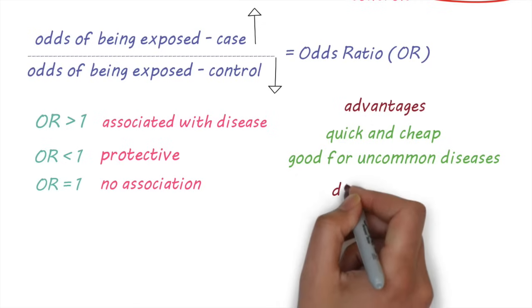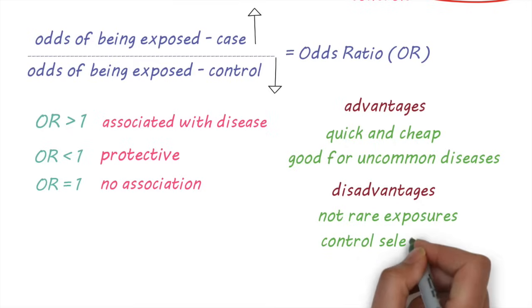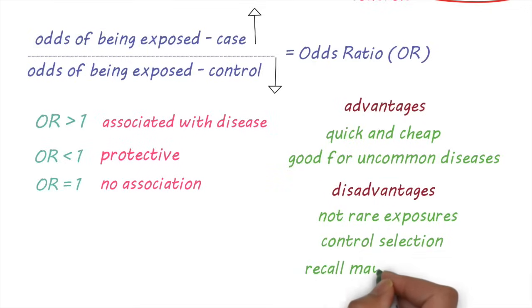However, because these studies involve small numbers, they're not good to study rare exposures. One of the challenges in a case control study is to find suitably matched controls. Also, because studies ask about exposures in the past, people might not be able to recall their exposures accurately.